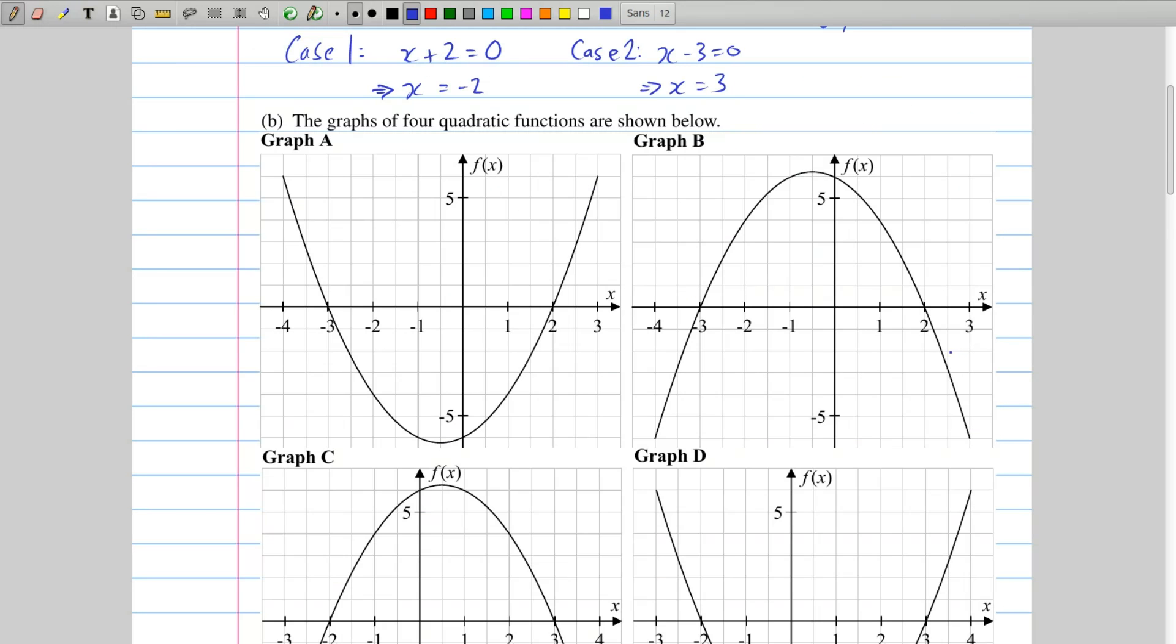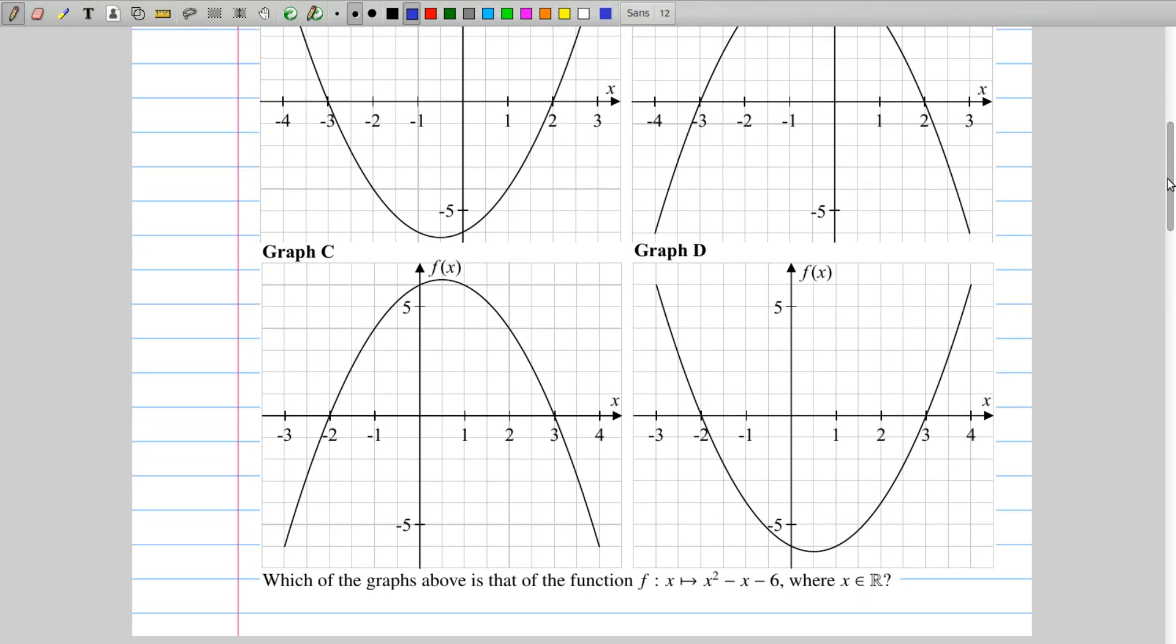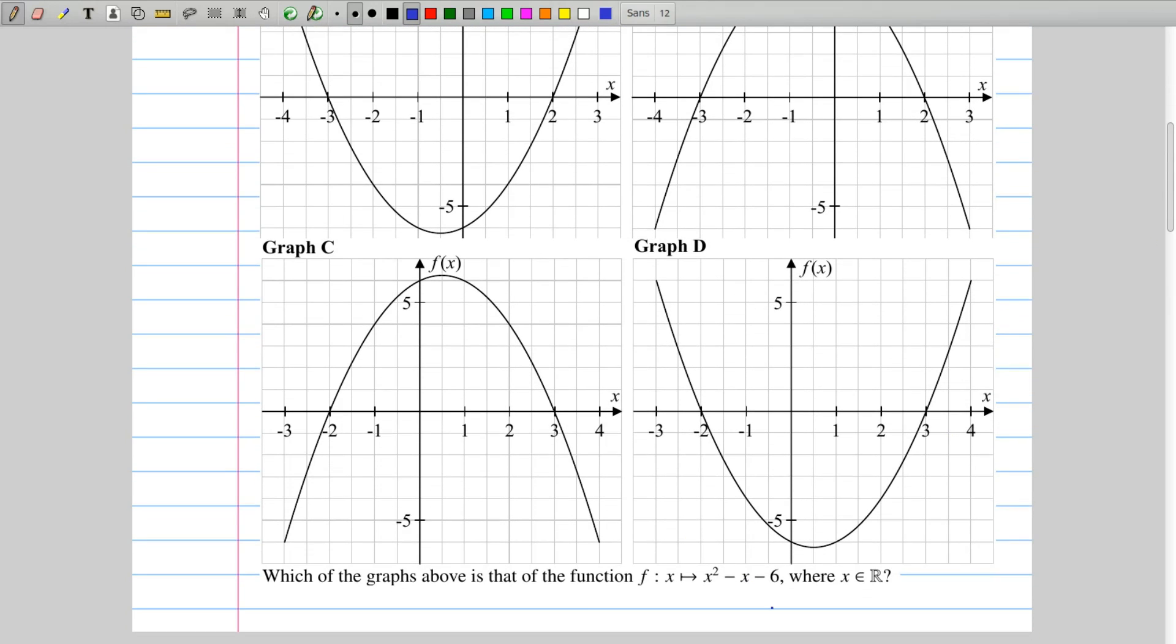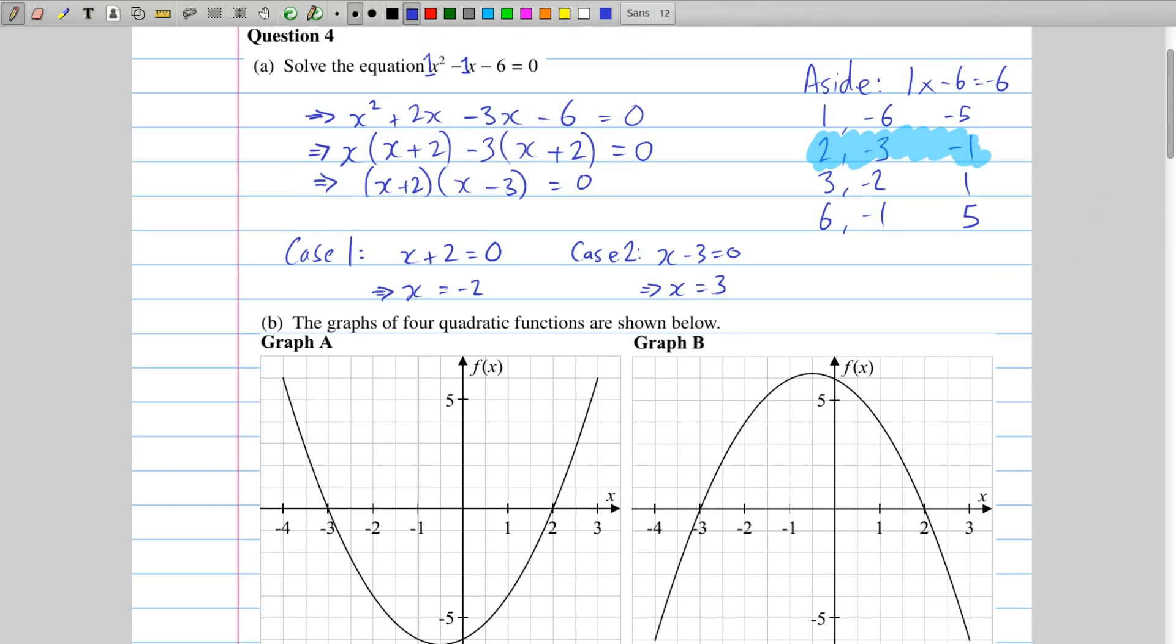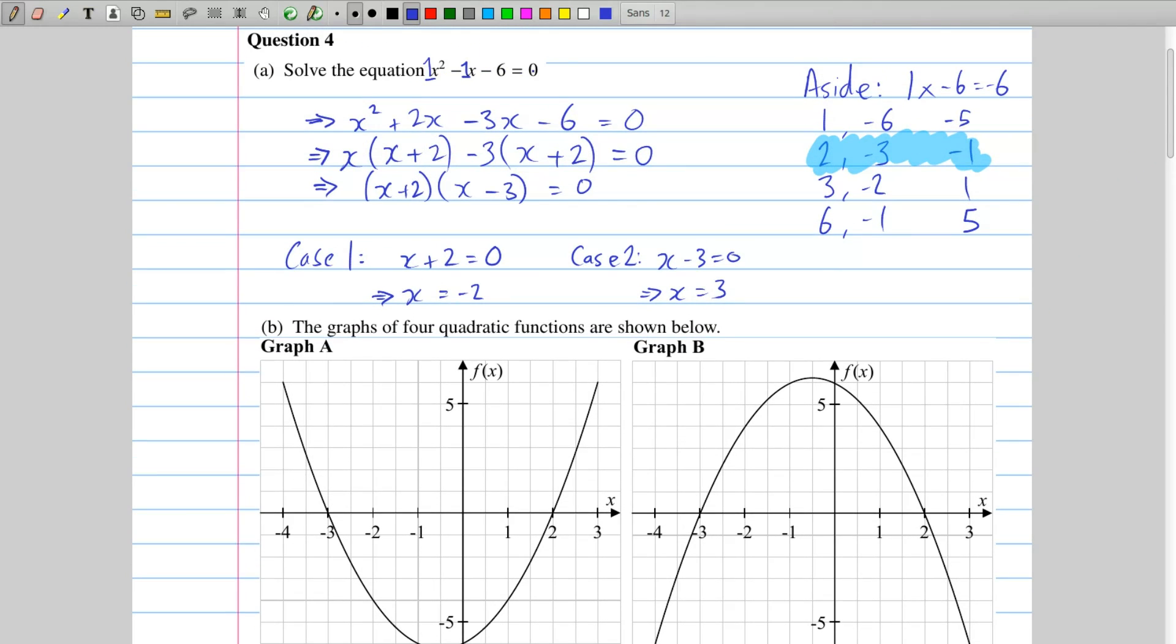Part b, then, gives us the graphs of four quadratic functions, a, b, c, and d. And it actually asks us which of the graphs is that of the function x squared minus x minus 6. And hopefully this looks familiar to you in a way, because the x squared minus x minus 6 was actually what we had in part a. It was x squared minus x minus 6 equals 0.